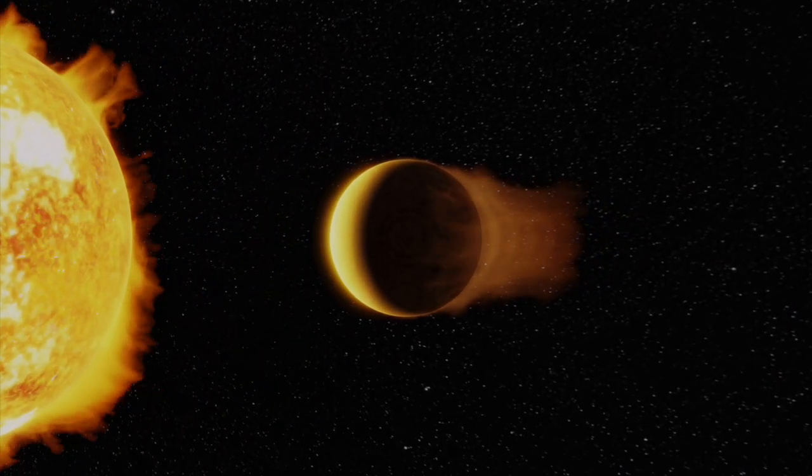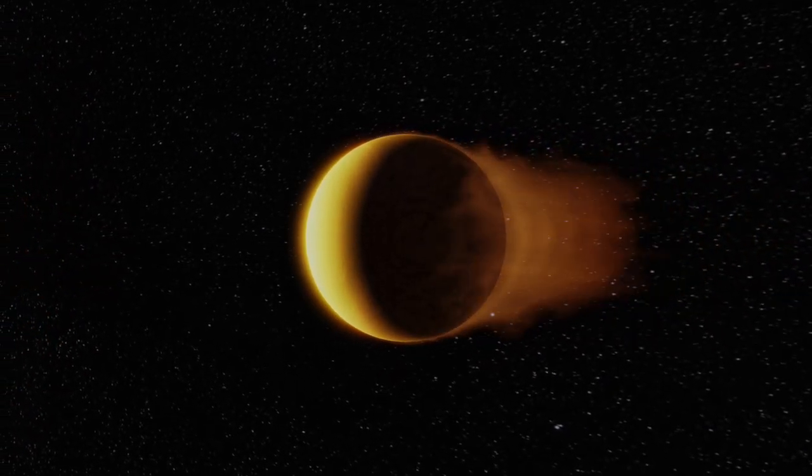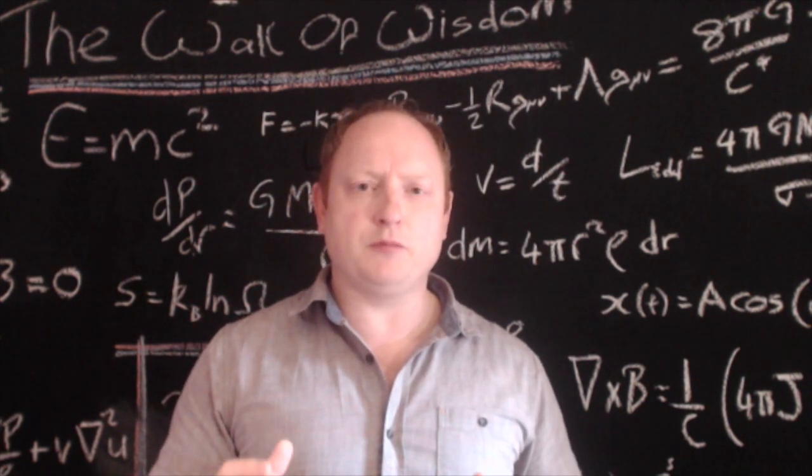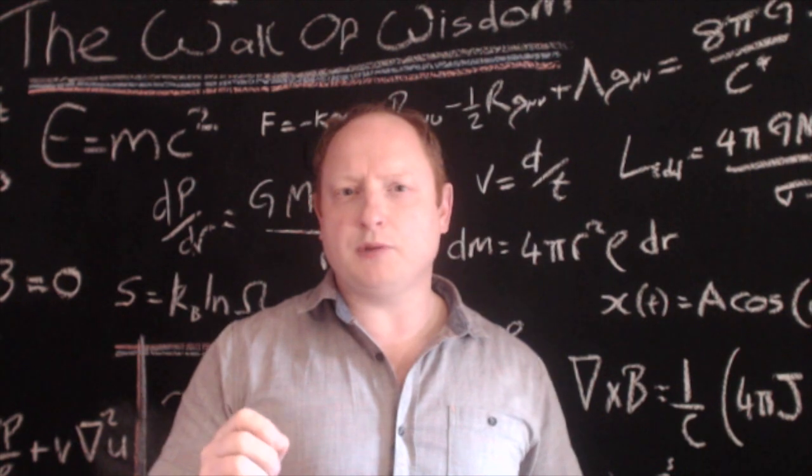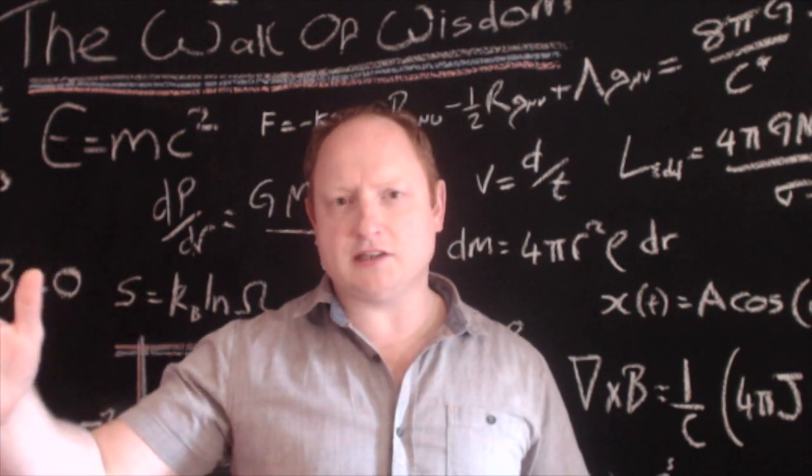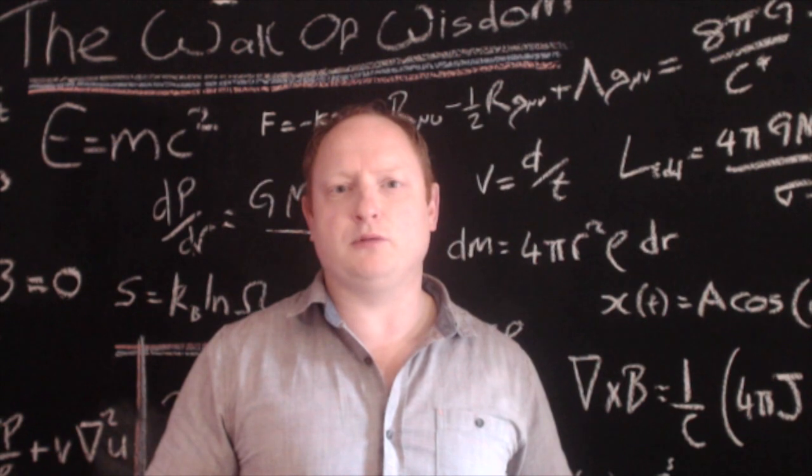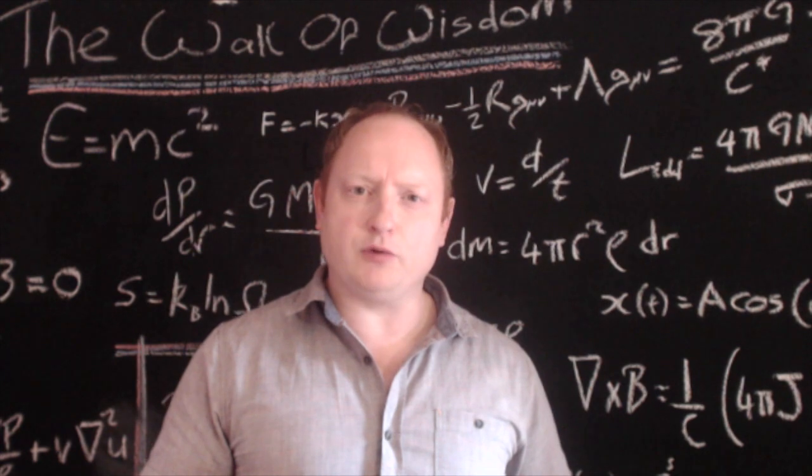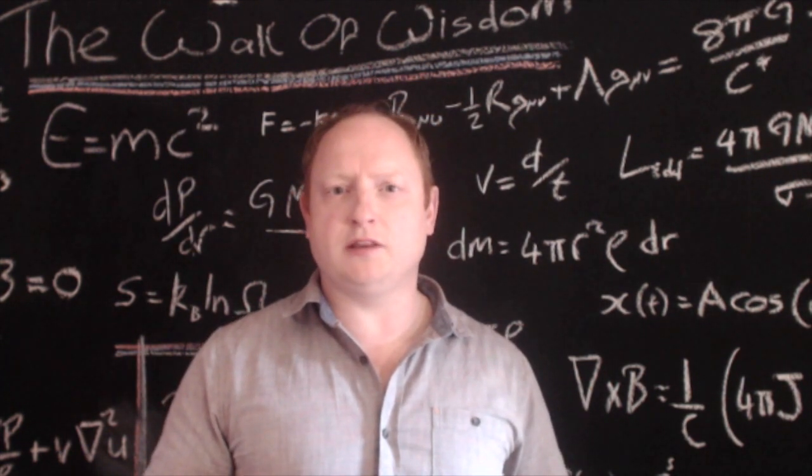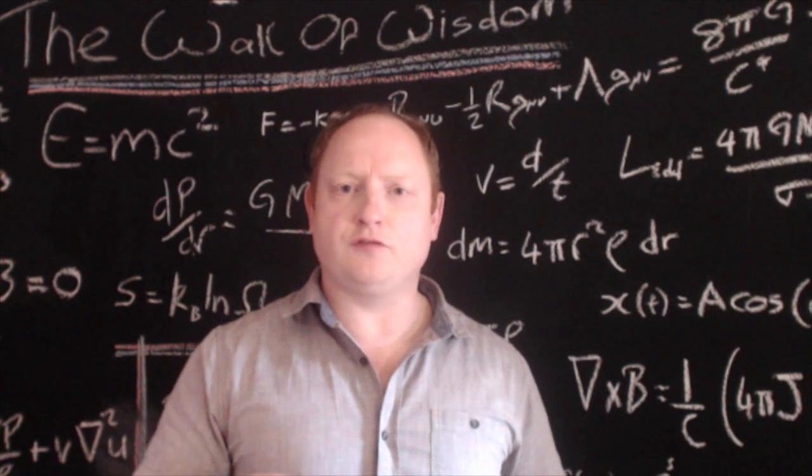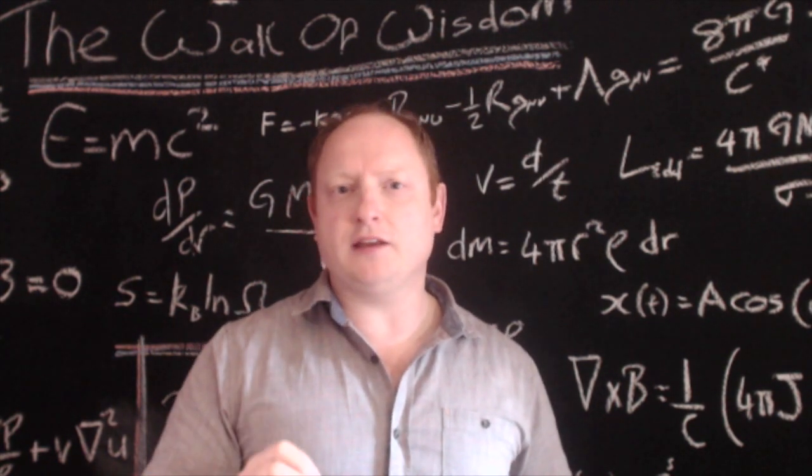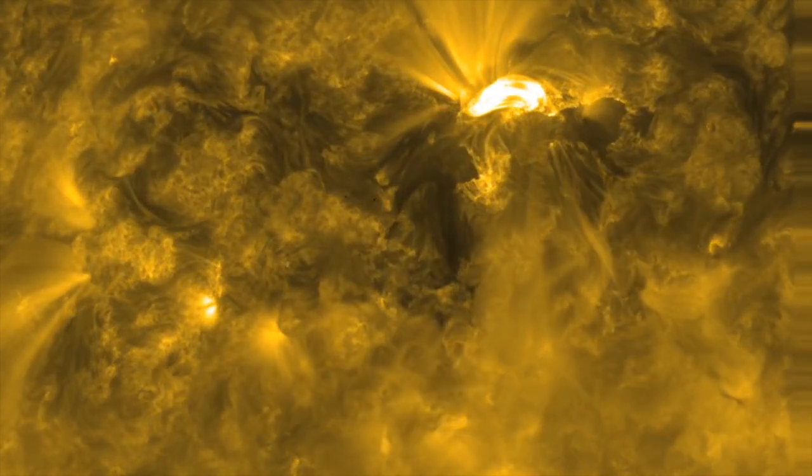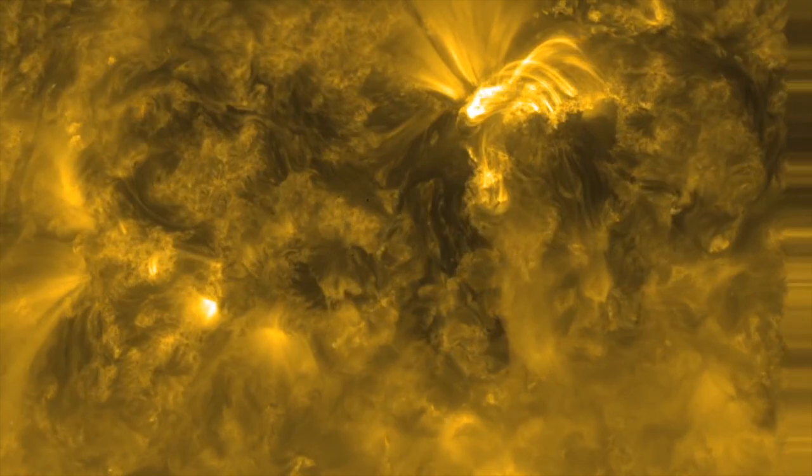It could, however, have formed much further out in the system and then migrated into its current orbit. Migration is an integral part of the planet formation and evolution process, moving giant planets from their large formation distances to short periods. The problem with this hypothesis is that the main migration pathway is through interactions between the planet and the protoplanetary disk in which it's forming. Yet disk lifetimes last only 5 to 10 million years, whereas the most active phase of the star happens on a longer period, in this case up to around 80 million years.